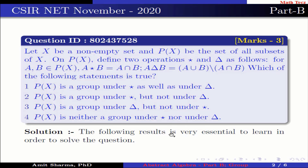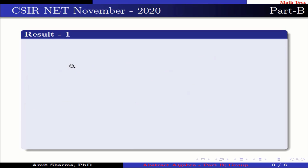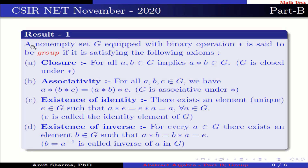The following results are very essential to learn in order to solve the question. Result number one: a non-empty set G equipped with a binary operation star is said to be a group if it satisfies the following axioms. First is closure: for all A, B belonging to G, A star B belongs to G — meaning G is closed under star. Next is associativity: for all A, B, C belonging to G, we have (A star B) star C equal to A star (B star C).